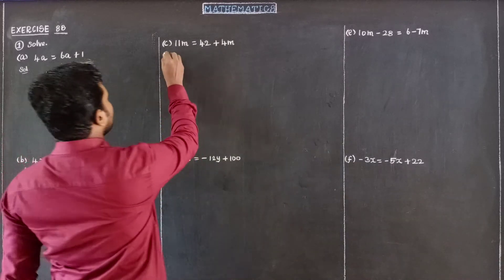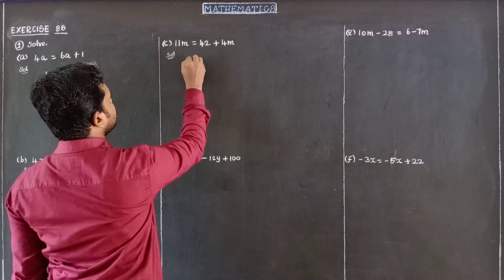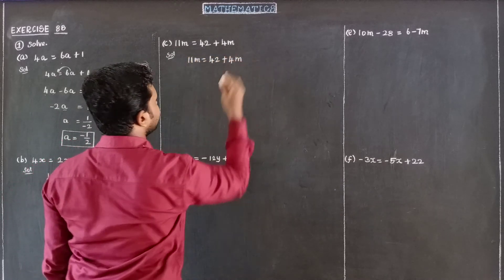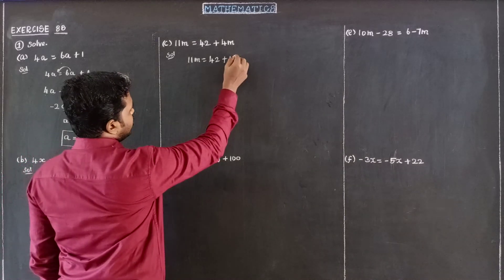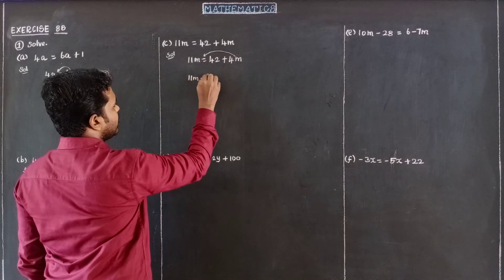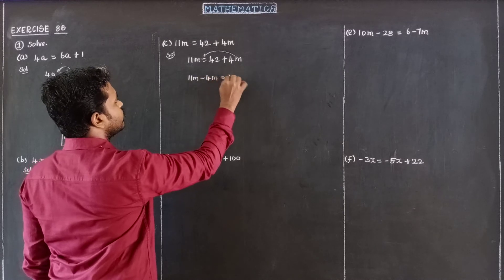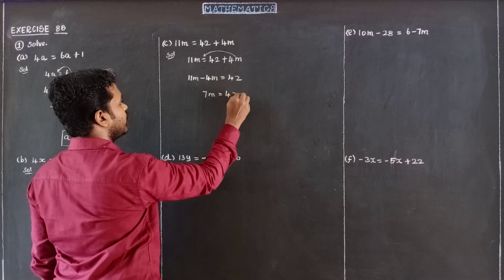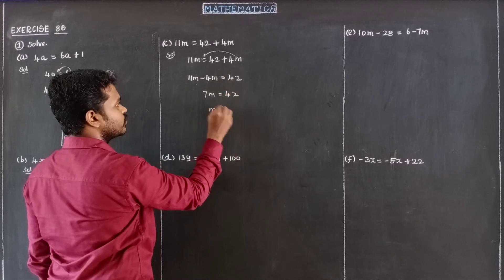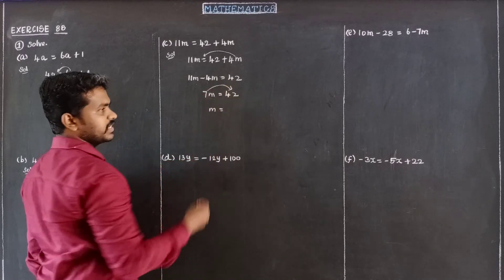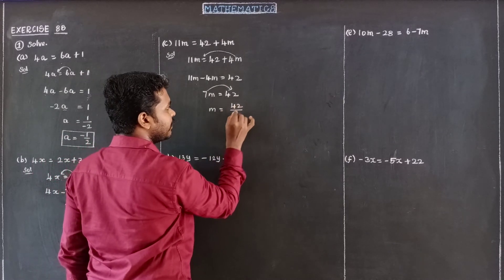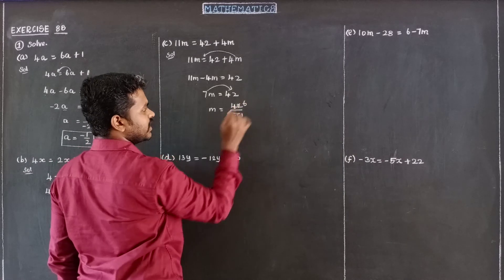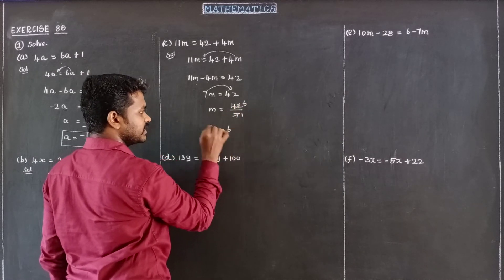Next is subdivision C: 11M equals 42 plus 4M. Bringing 4M to the left side, 11M minus 4M is equal to 42. That gives 7M equal to 42. Dividing both sides by 7: 6 sevens are 42. Therefore the value of M is 6.